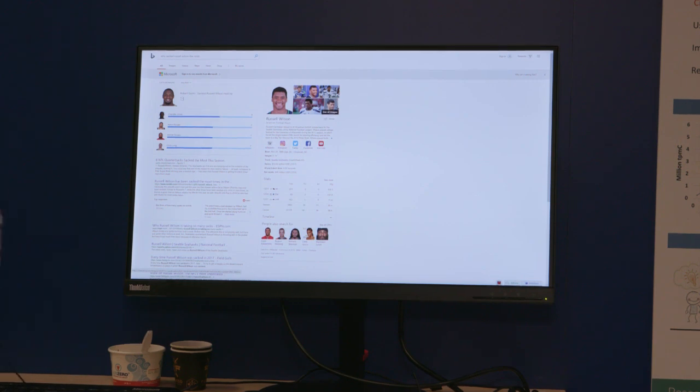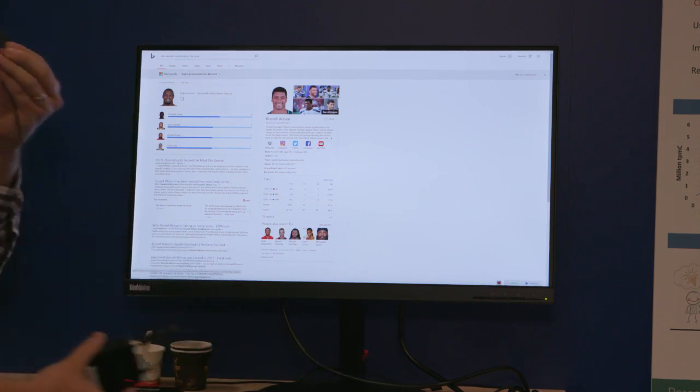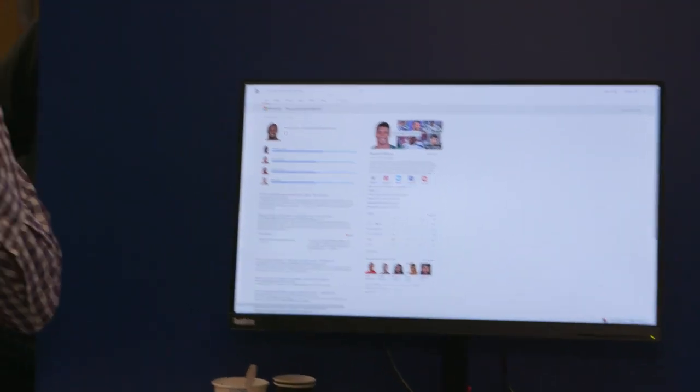We get this result showing that the people that have sacked Russell Wilson the most is Robert Quinn. This query, once it comes to our back end, executes a six-hop graph query that does 20 to 2,000 reads, and we're able to perform this in tens of milliseconds. So this is just a small example of what we'll be able to do with FARM and A1 and put into production with Bing. Thank you.